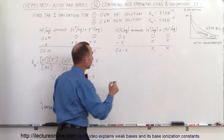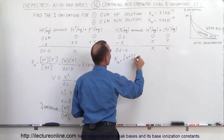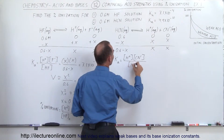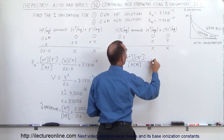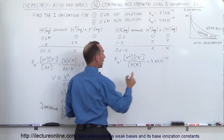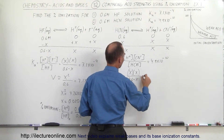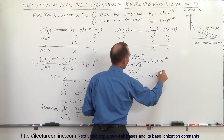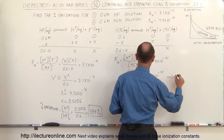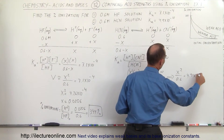By definition, the ionization constant equals the concentration of the hydrogen ion times the concentration of the conjugate base, divided by the final concentration of the acid. That should equal 4.9 times 10 to the minus 10. Replacing with X and X, we have X squared divided by 0.6 minus X equals 4.9 times 10 to the minus 10. Again, we approximate X as very small, so X squared divided by 0.6 equals 4.9 times 10 to the minus 10.